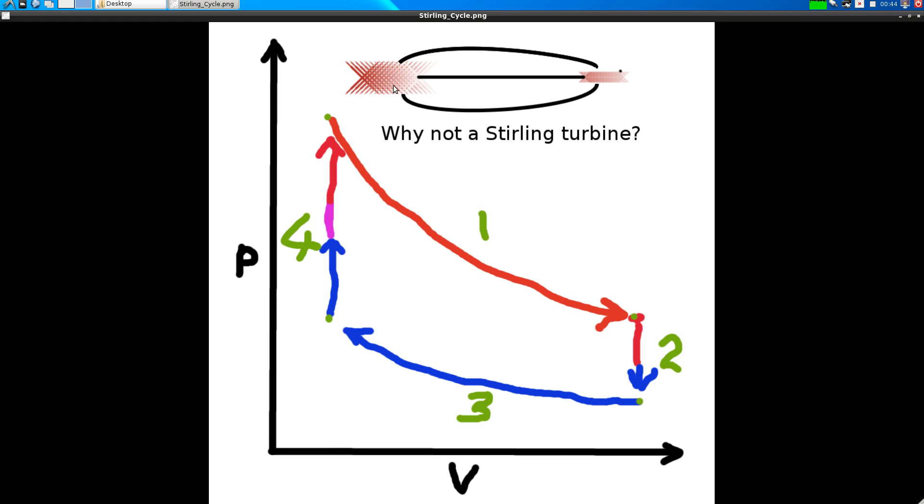You'd have the hot turbine, this could be the heat input area, and if you can imagine another turbine just below it as the exhaust area.